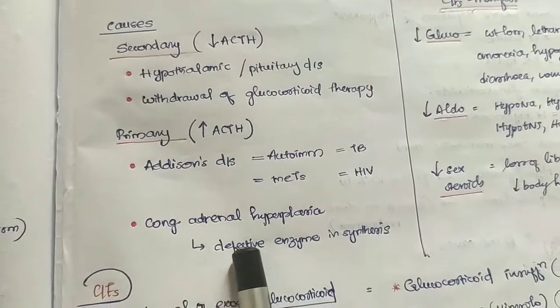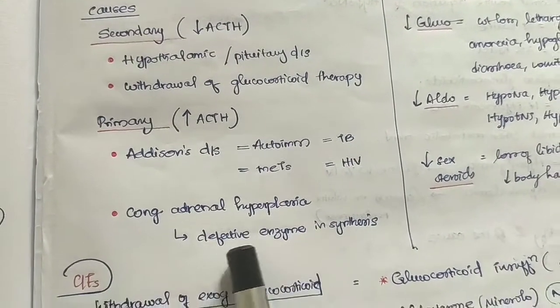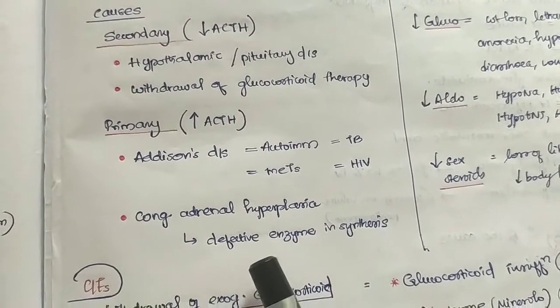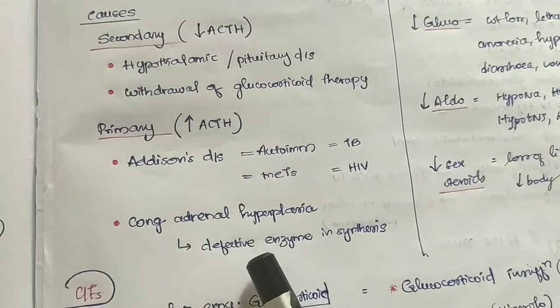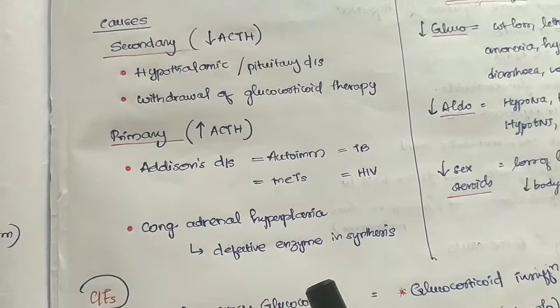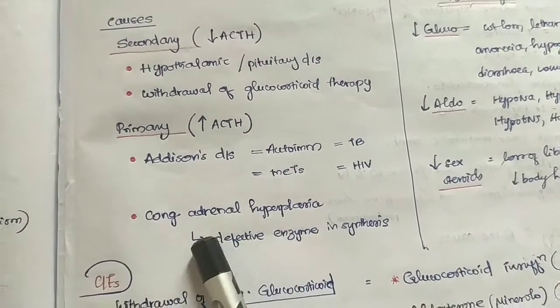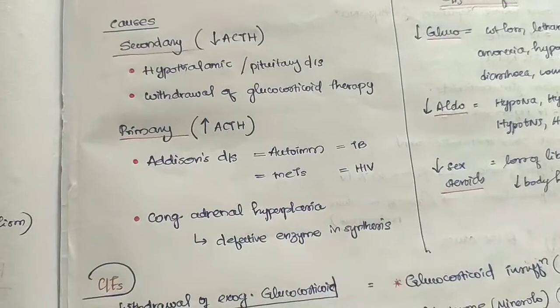This is congenital adrenal hyperplasia. It involves defective enzyme synthesis — the adrenal gland cannot synthesize its hormones properly due to a defective enzyme, resulting in insufficient adrenal gland hormone production.